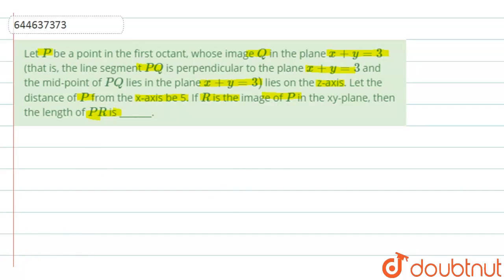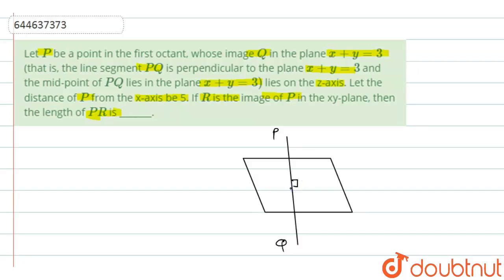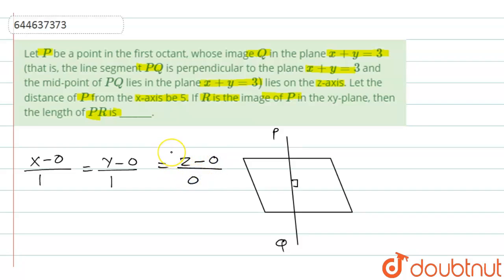Let this be our given plane, point P is here and point Q is here, so PQ is the line passing through this plane. The equation of the line can be written as x minus 0 divided by 1 equals y minus 0 divided by 1, since for the plane x plus y equals 3, the direction ratios are 1, 1, and 0. So z minus 0 divided by 0. Taking Q as the point (0, 0, 0), the equation of line has direction ratios 1, 1, and 0.